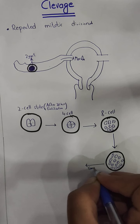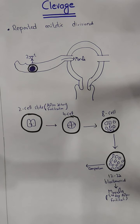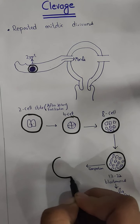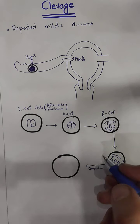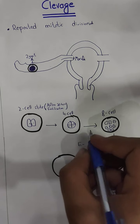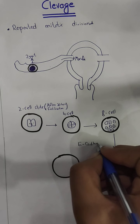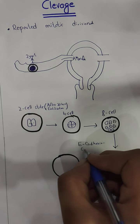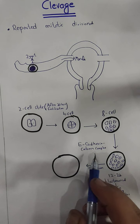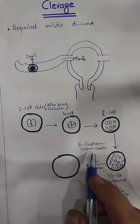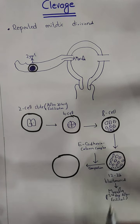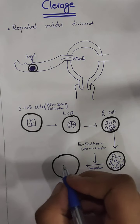After compaction occurs. Compaction is a process where the cells compact together. Compaction involves complex E-cadherin — it is actually a cell surface adhering glycoprotein. Under compaction conditions, the cells become compact like this.